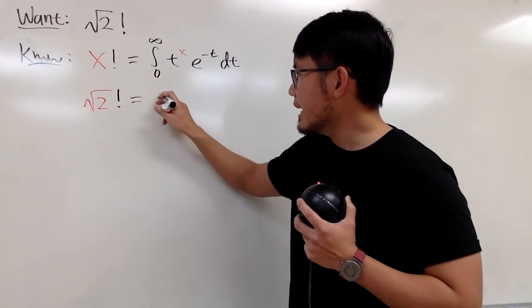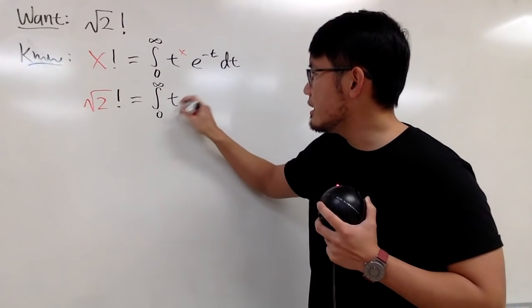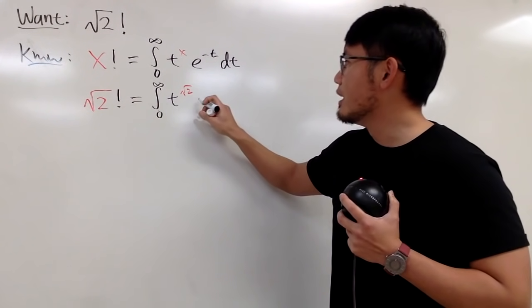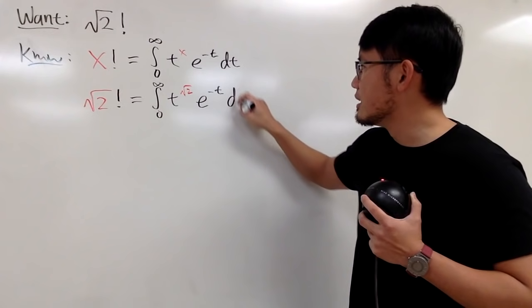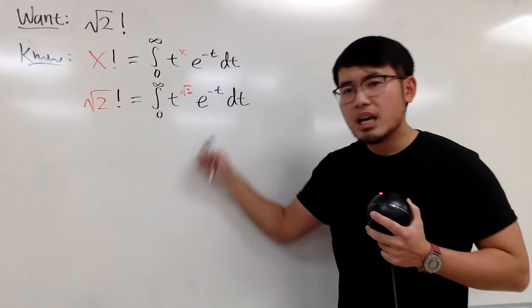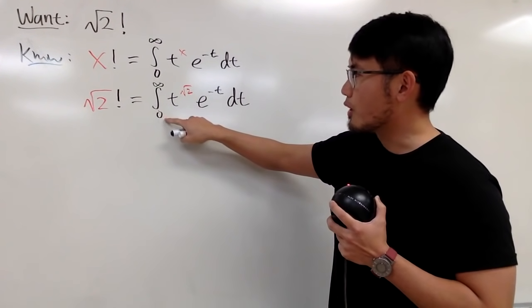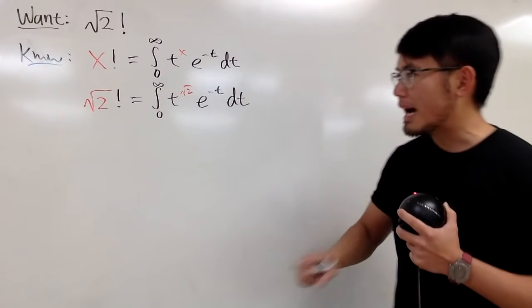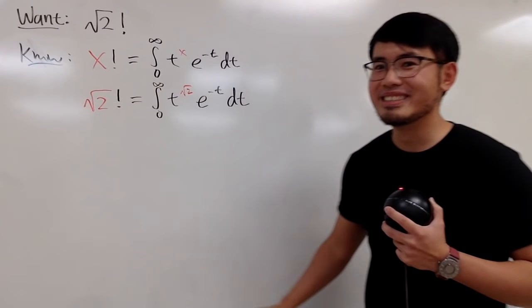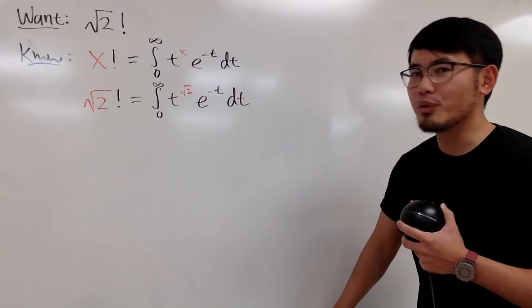This right here is nicely equal to the integral from 0 to infinity, t to the square root of 2 power, times e to the negative t dt. And yes, this right here is an improper integral because we go from 0 to infinity, but this right here nicely converges. So we have a finite value for that.